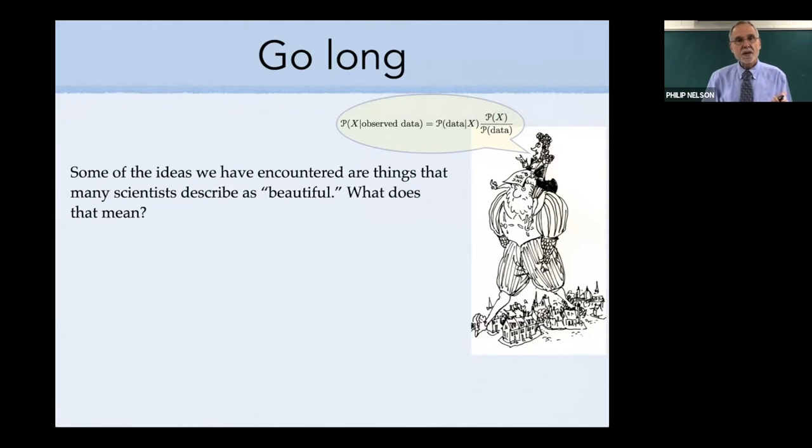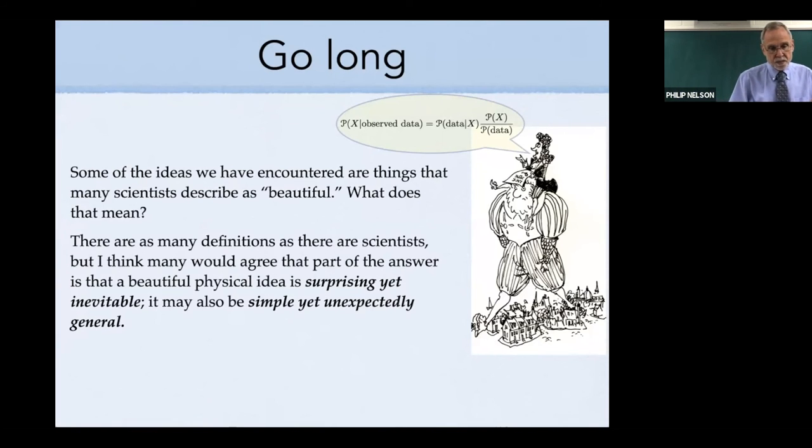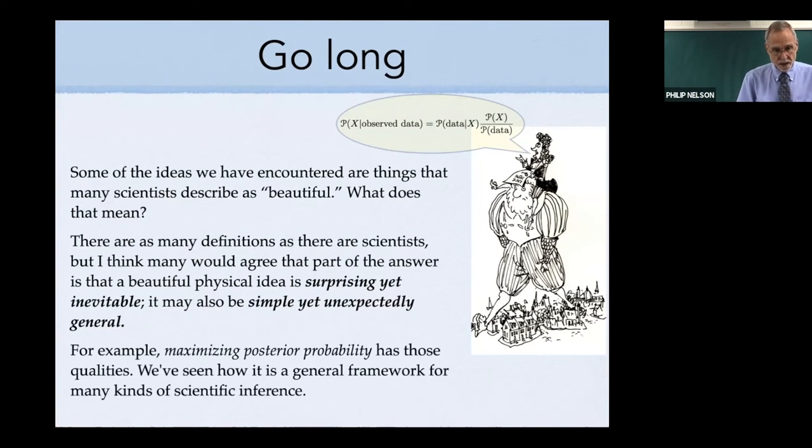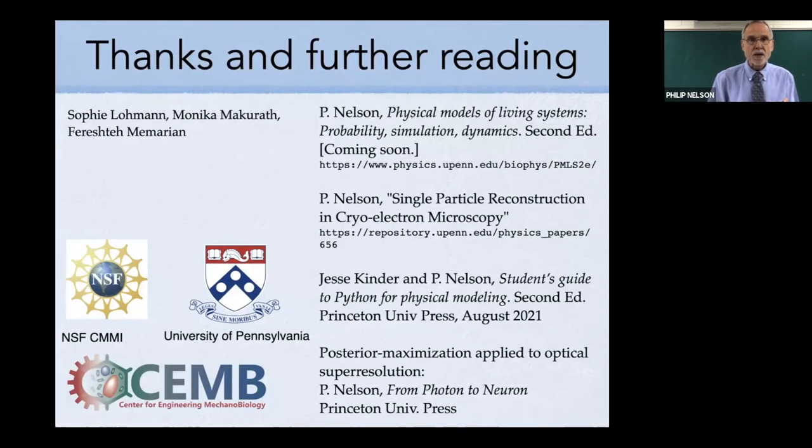Some of these ideas are things that I think physicists would consider as beautiful. Let's not forget what I mean by beautiful. Part of the answer is I think an idea is beautiful if it's surprising yet in retrospect inevitable—oh, I should have thought of that. That's part of what I mean by beautiful. The other part is it's simply yet unexpectedly general. I think optimizing posterior probability meets both of those criteria. It's a general framework for many kinds of scientific inference, including the one that's the basis for the cryo-electron microscopy revolution.